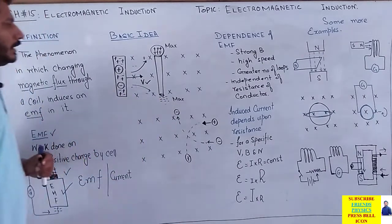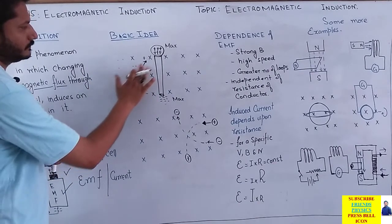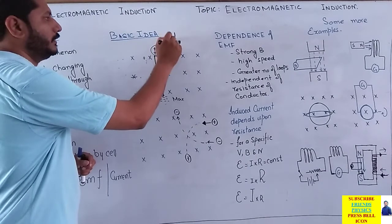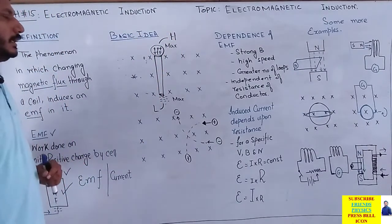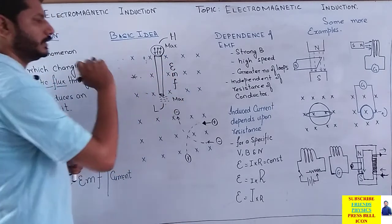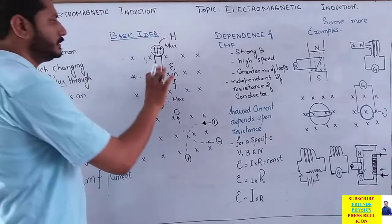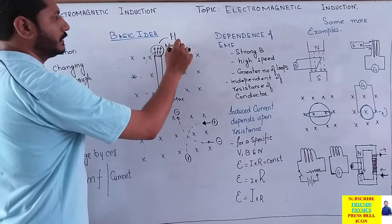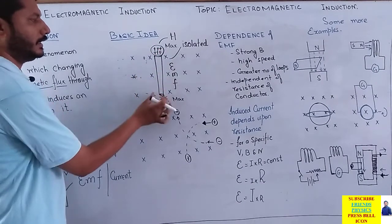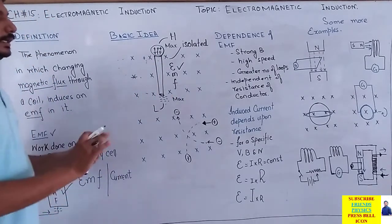اگر اس conductor کو تھوڑا اور speedily move کریں تو number of positive charges on upper end and negative charges on lower end may increase۔ اب اس conductor کا ایک end higher potential پر اور دوسرا end lower potential پر آ گیا۔ کیا ہم کہہ سکتے ہیں کہ اس conductor کے اندر کیا induced ہو گیا؟ اس کے اندر EMF induced ہو گیا — یہ چلتا پھرتا cell بن گیا۔ It means: ایک isolated conductor جو ایک اکیلا ہے، جس کے ساتھ کوئی circuit involved نہیں، اس میں بھی EMF induced ہو سکتا ہے۔